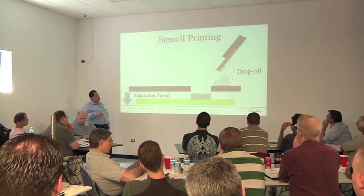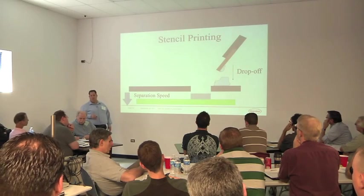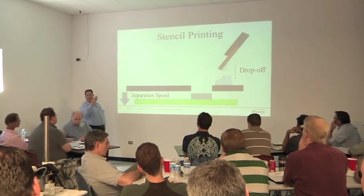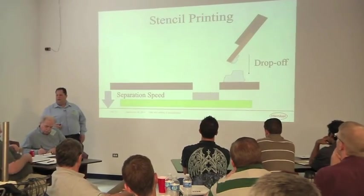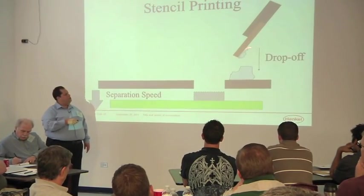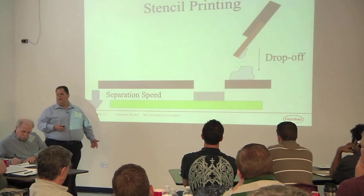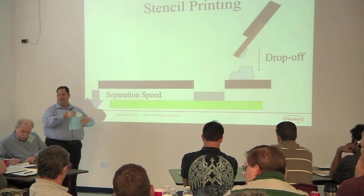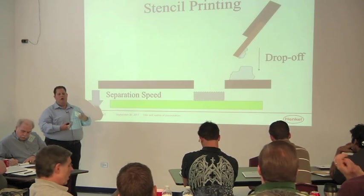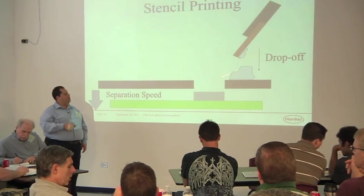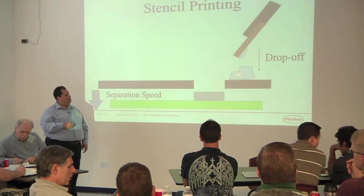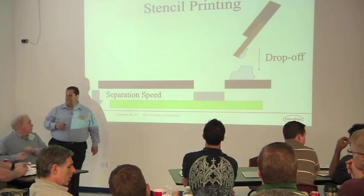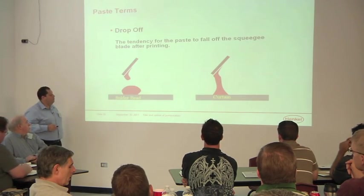We also want this paste to drop off the squeegee blade because usually you're going to have another blade that's going to come down and you want to print in the other direction. So if that paste is all gummed up and sticky on here, that's not good. So the paste has got to have that rheology and viscosity in a way that'll actually fall and drop off that squeegee, allowing it to be a nice brick here so you can print in the other direction.